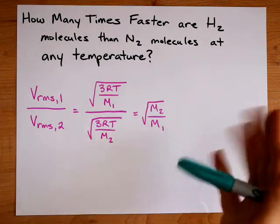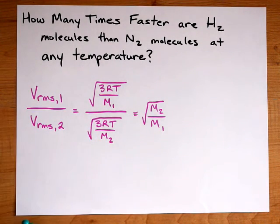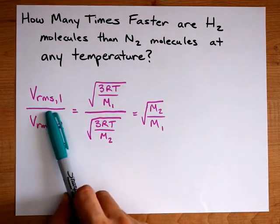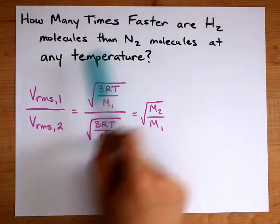The reason it's interesting is because it's the ratio of the root mean square speeds. The root mean square speed of hydrogen divided by the root mean square speed of nitrogen gives us how many times faster it is.